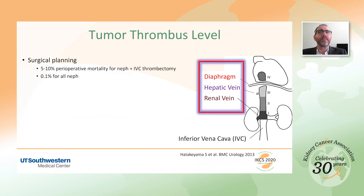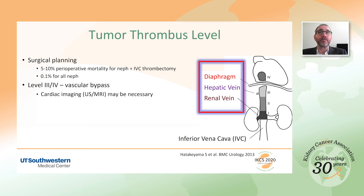Recognizing the distal thrombus with respect to three anatomic structures — the renal vein, the hepatic veins, and the diaphragm — is critical because these are major surgeries with substantial perioperative mortality, in fact at 10% compared to 0.1% of nephrectomies in general. Level 3 and 4 tumor thrombus may require vascular bypass, so on occasion dedicated cardiac imaging with echo or MRI may be necessary, but in general CT and MRI are sufficient and the most commonly used techniques to assess tumor thrombus in the IVC.